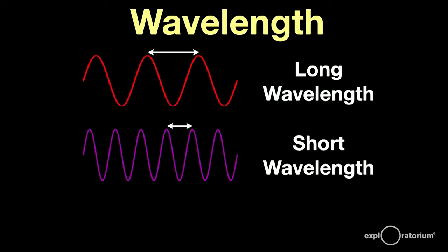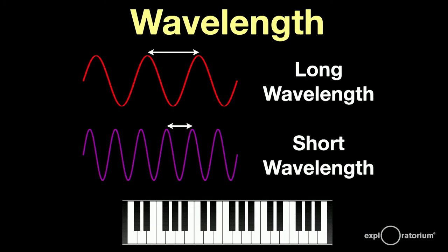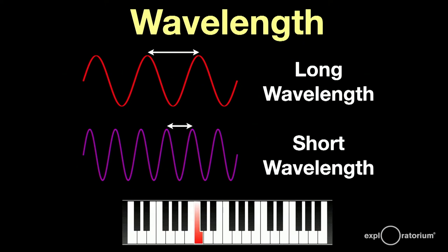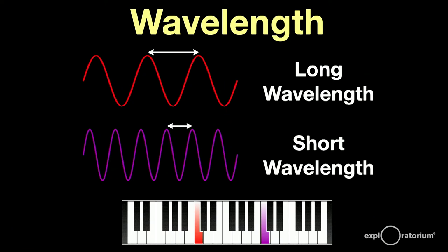Here, you see the red wave has twice the wavelength of the violet wave. If we played these two waves on a piano, the red wave might sound like this, and the violet wave would sound like this, an octave apart. As a matter of fact, red and violet light wavelengths and frequencies are about an octave apart. We can see about an octave of light.